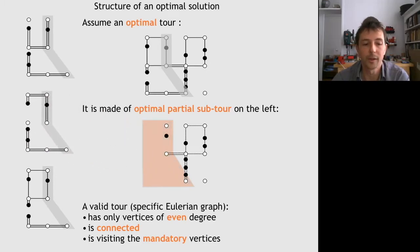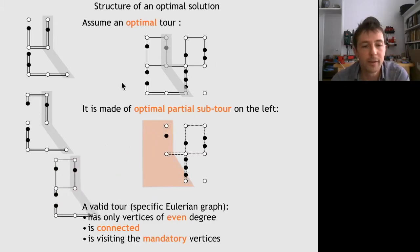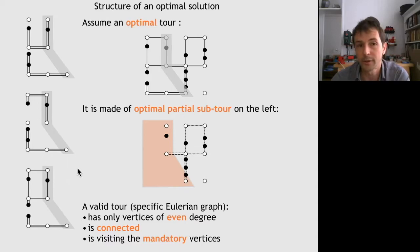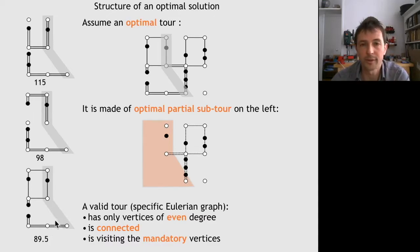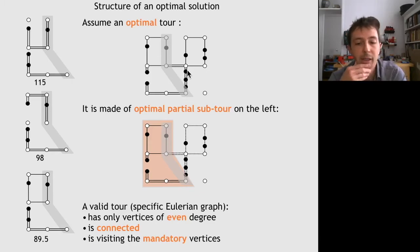This subtour satisfies the property for the vertices in the separator, and so do others. If this solution is to be optimal, then among all these possibilities, this one must be one of the shortest — because this solution is assumed to be optimal. If not, we would have a contradiction. This is the key point of dynamic programming.